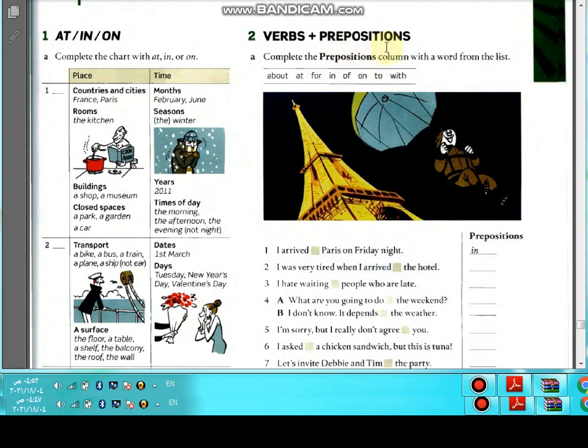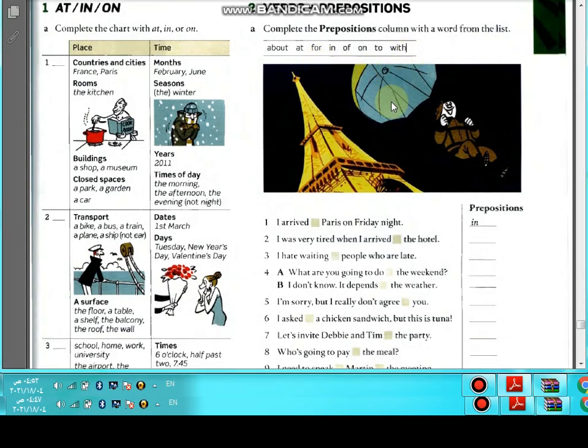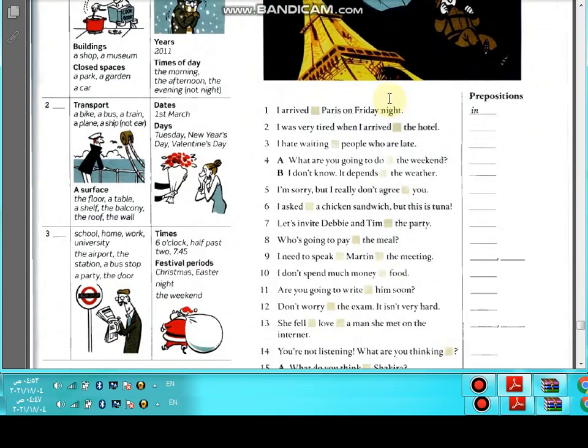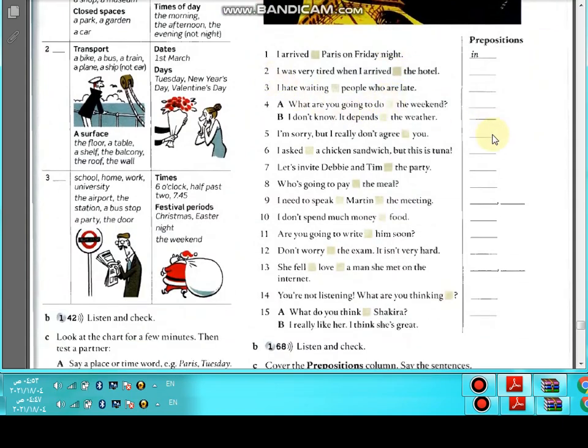Okay, verbs and prepositions. Complete the prepositions column with the word from the list. We will use about, at, for, in, on, to, with. We will put them in the spaces here. So I will do it immediately because I've sent you new tracks and you will send to it. Number one, in. Number two, at. Number three, for. Number four, we have two spaces. What are you going to do at? I don't know, it depends on. Number four, we have at, on.